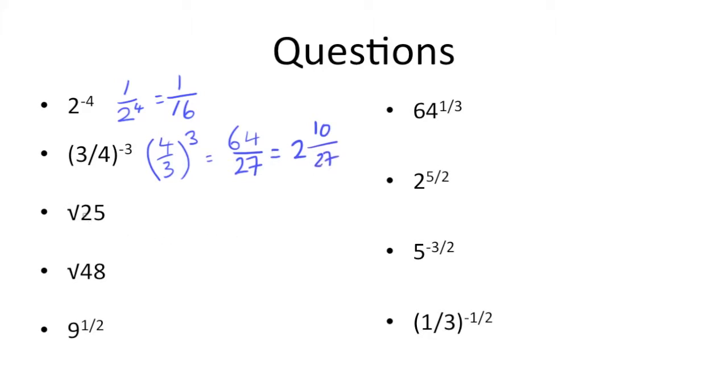Next off, we have the square root of 25. Now 25 is a perfect square, since 5 squared is 25, so the answer is 5.